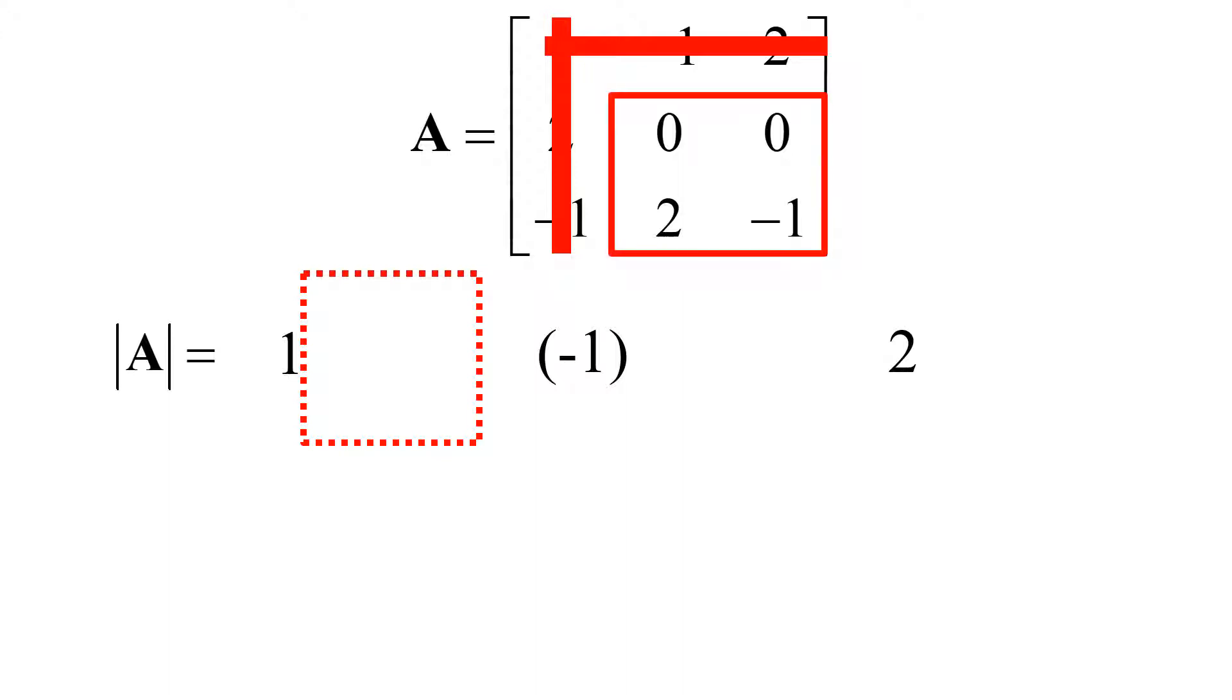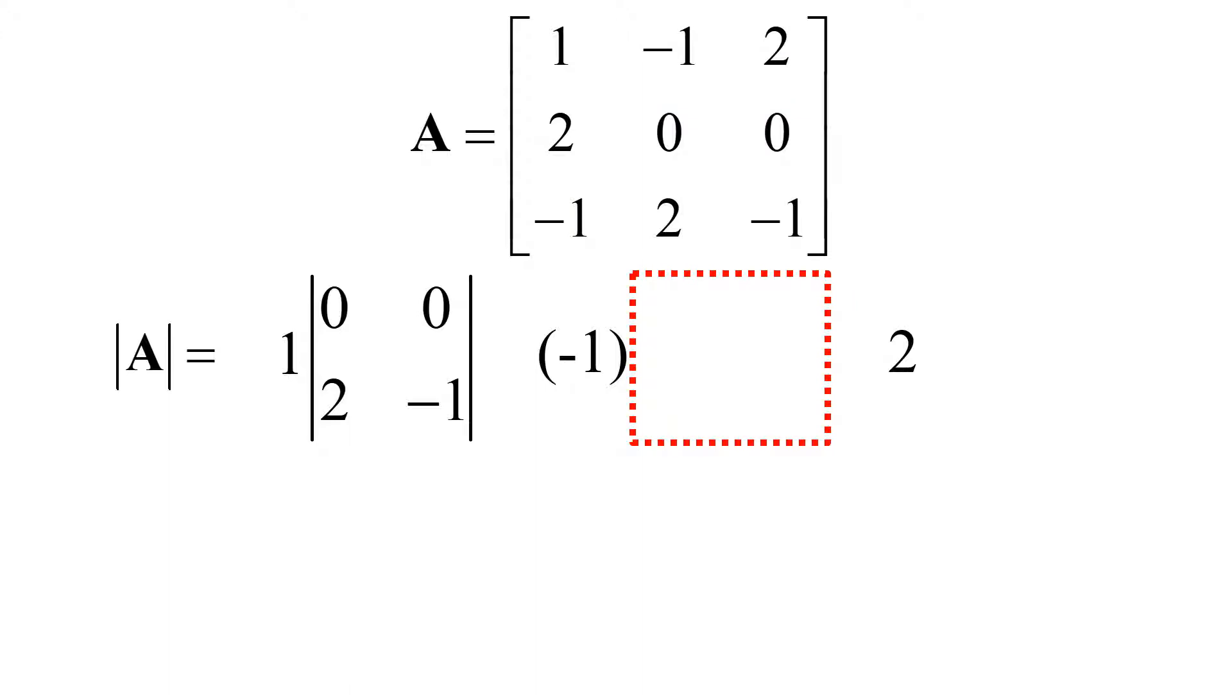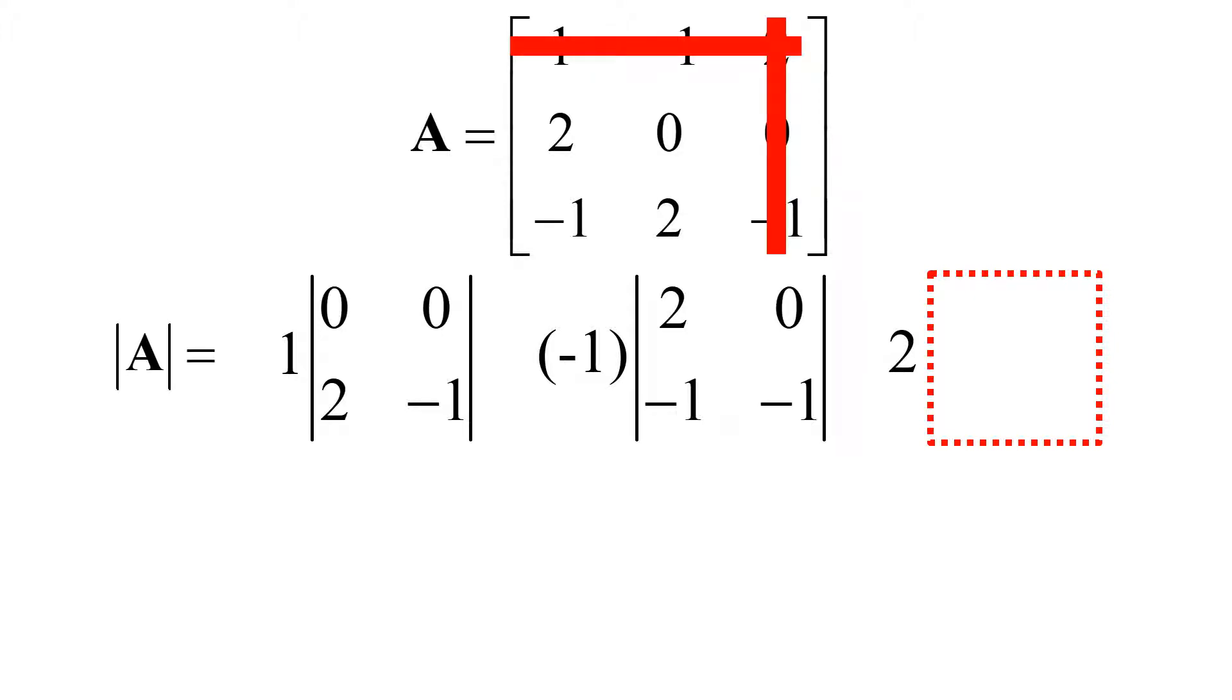So we have 0, 0, 2, and minus 1. And my first sub-matrix is 0, 0, 2, and minus 1 for the determinant. Next step is to bring four elements by removing the first row and the second column as a 2x2 sub-matrix for the determinant, since my second element is located at the first row and the second column. Next step is to select four elements by removing the first row and the third column, because my third element is sitting at the first row and the third column.